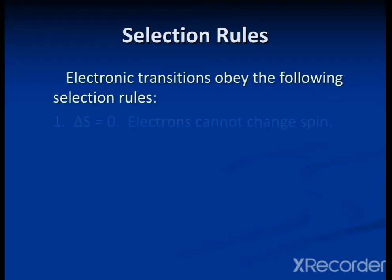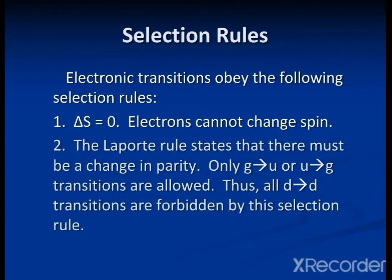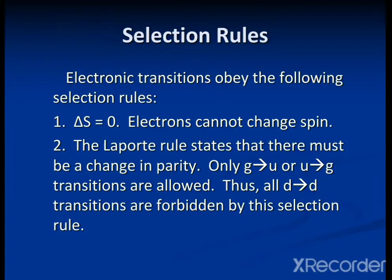All transitions are not allowed because there are certain selection rules. Those transitions which obey the selection rules are allowed transitions, and those which do not obey them are known as forbidden transitions. There are basically three types of selection rules. The first is the spin selection rule, which states that ΔS = 0. It means that when an electron is excited from a lower energy orbital to a higher energy orbital, its spin must not change — the initial total spin value must equal the final spin value.